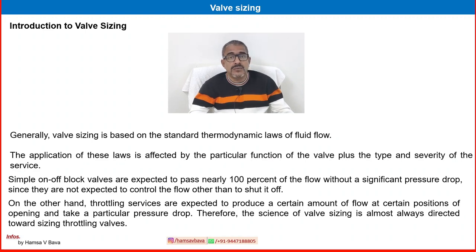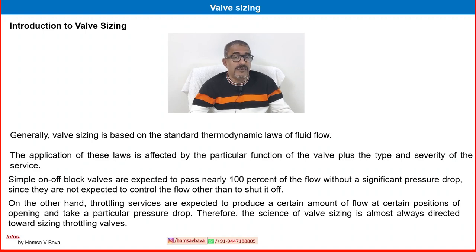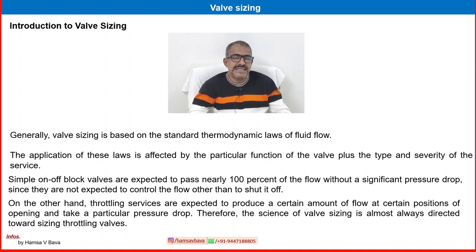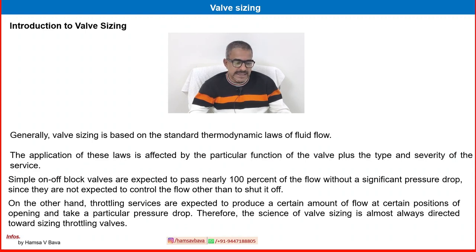On the other hand, throttling valves are expected to produce a certain amount of flow at certain positions of opening and take a particular pressure drop — unlike on-off valves. We have already studied the differences between control valves, isolation valves, and manual valves. Therefore, the science of valve sizing is almost always directed towards sizing of throttling valves.